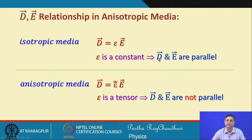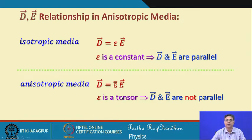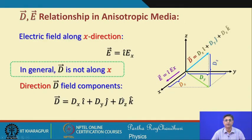In an isotropic medium the electric field vector and displacement vector point along the same direction. In anisotropic media, D and E are in general in different directions because epsilon is a tensor — a 3×3, nine-component tensor — as a consequence of the tensor property of the permittivity of the anisotropic material.